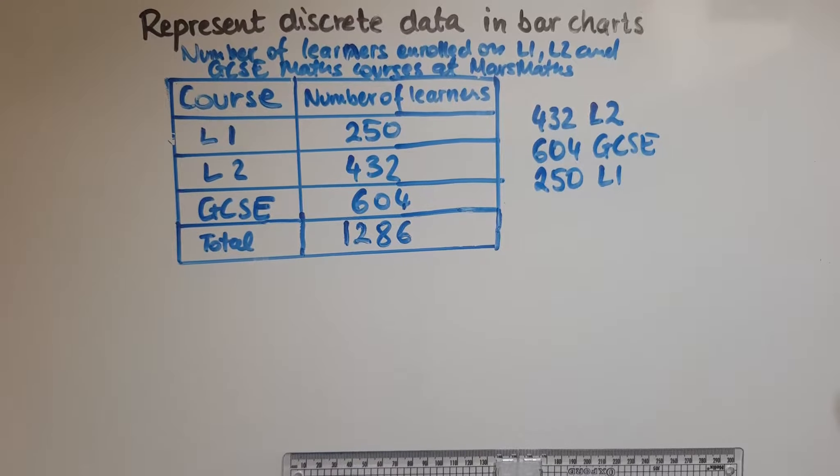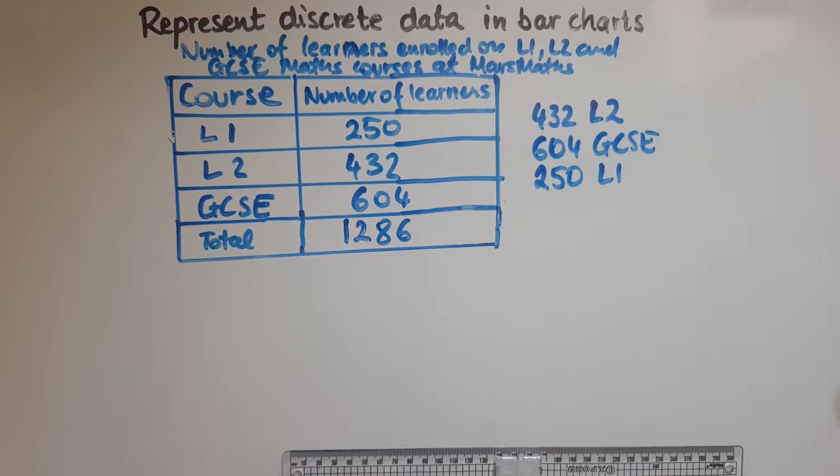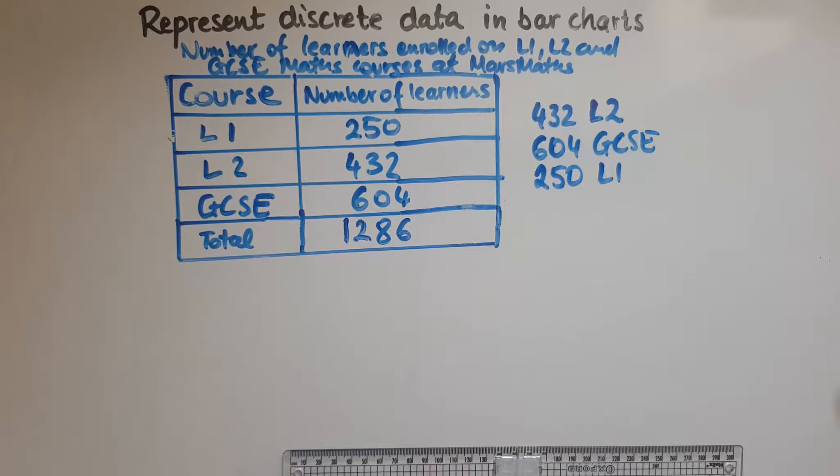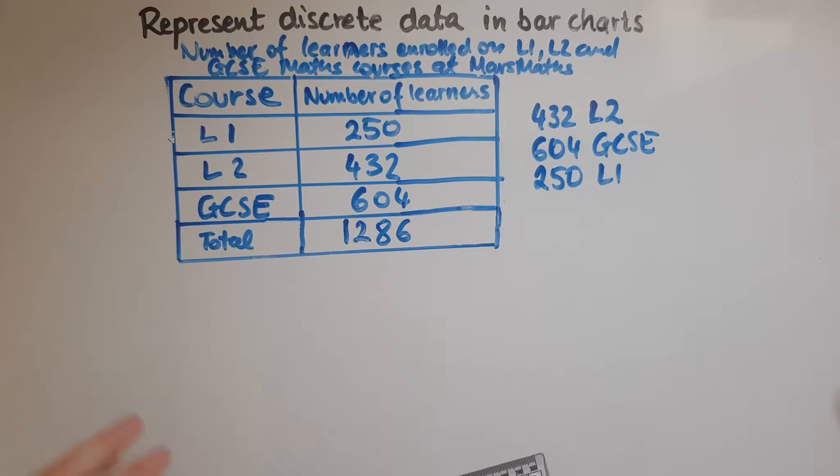Here we'll learn how to represent data, discrete data in fact, in bar charts. Again, discrete data means that we deal with whole numbers, not decimals or fractions. We'll use the same scenario, the same context we had before, looking at the number of learners enrolled on level 1, 2, or GCSE maths courses at a specific place, and we'll show the same data using a bar chart.